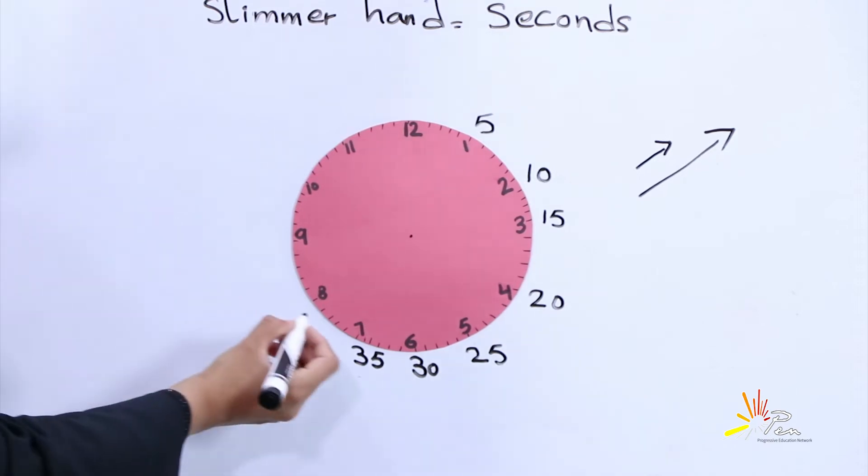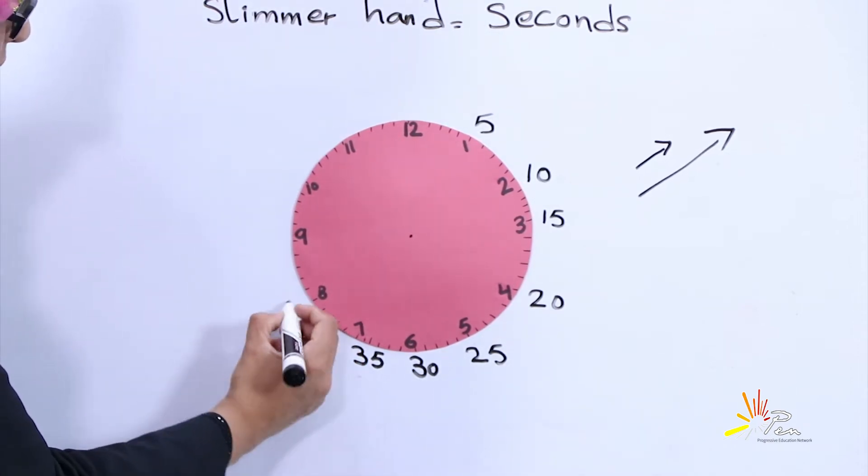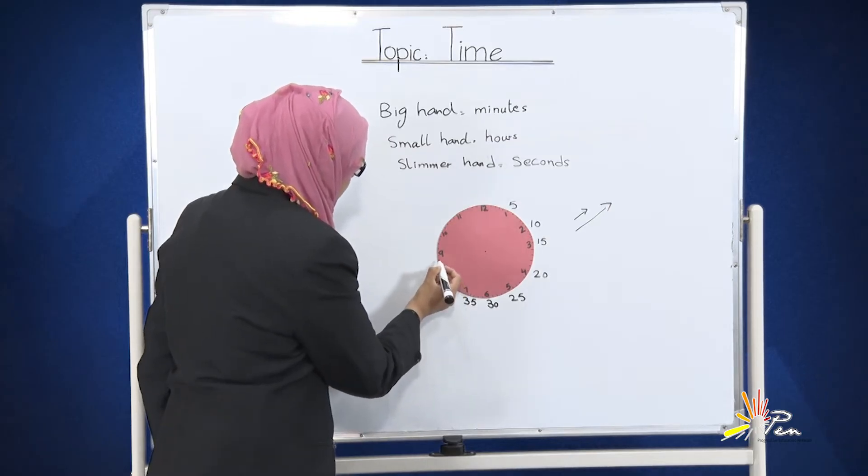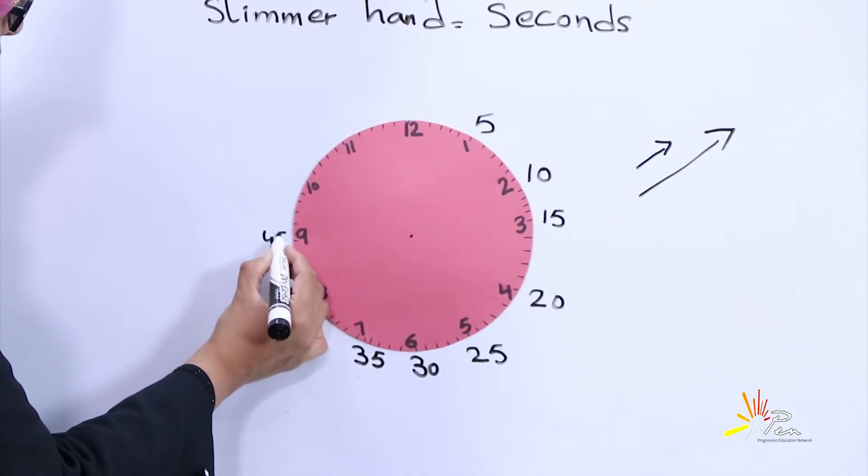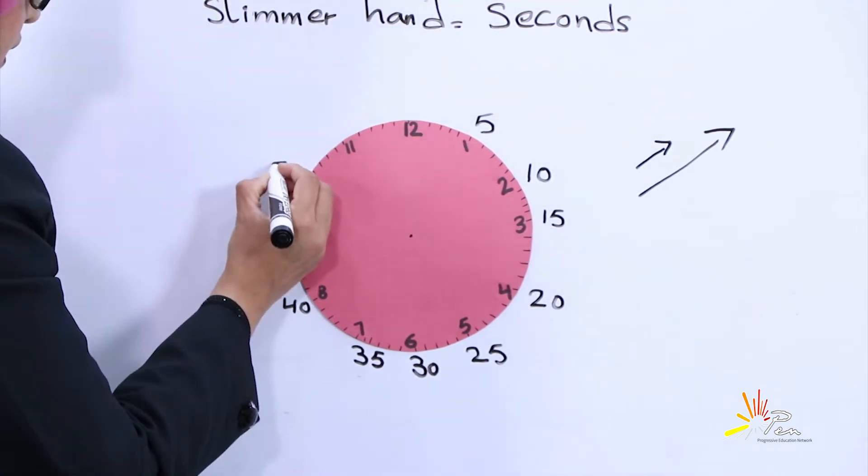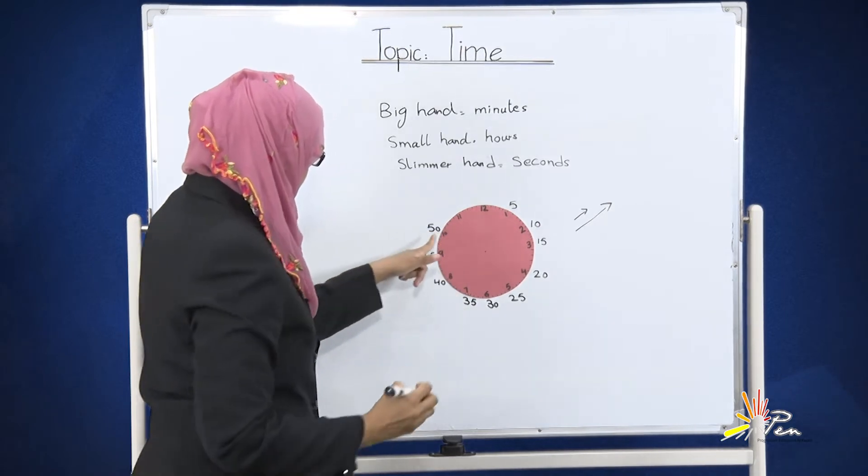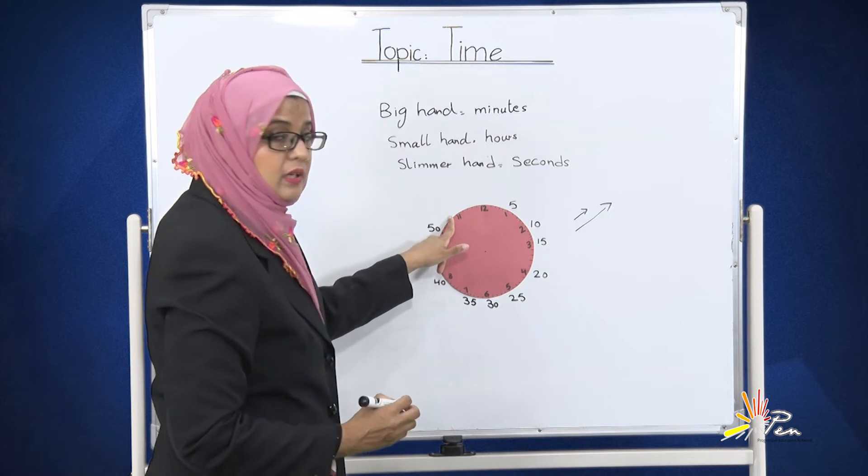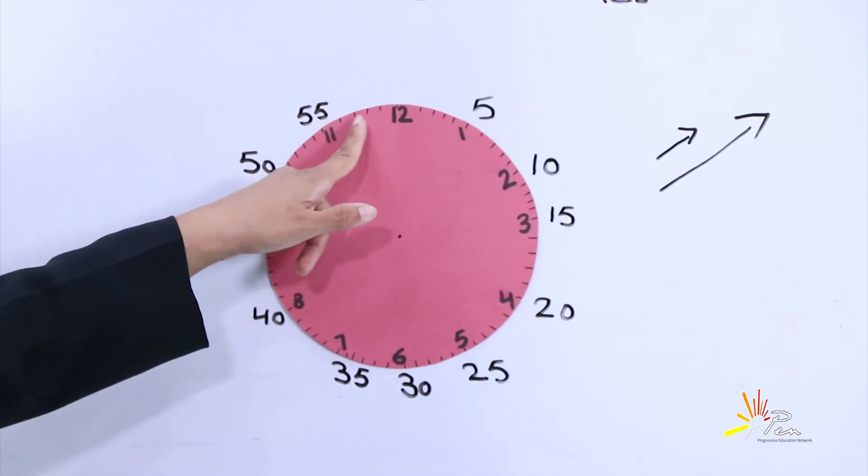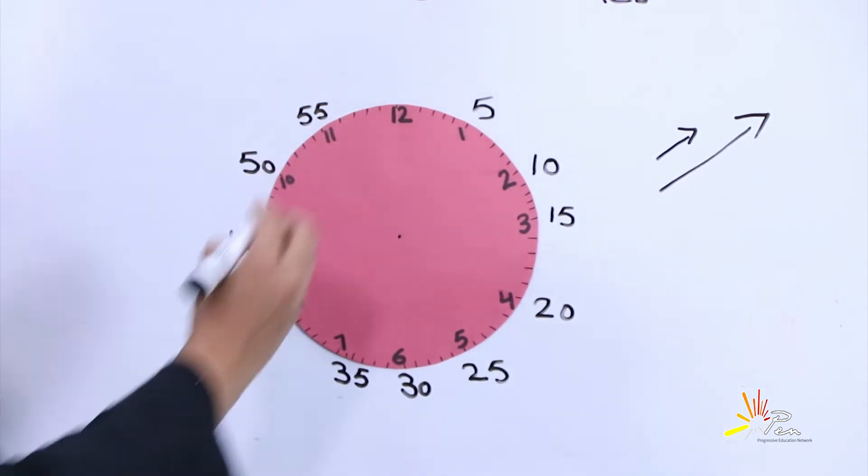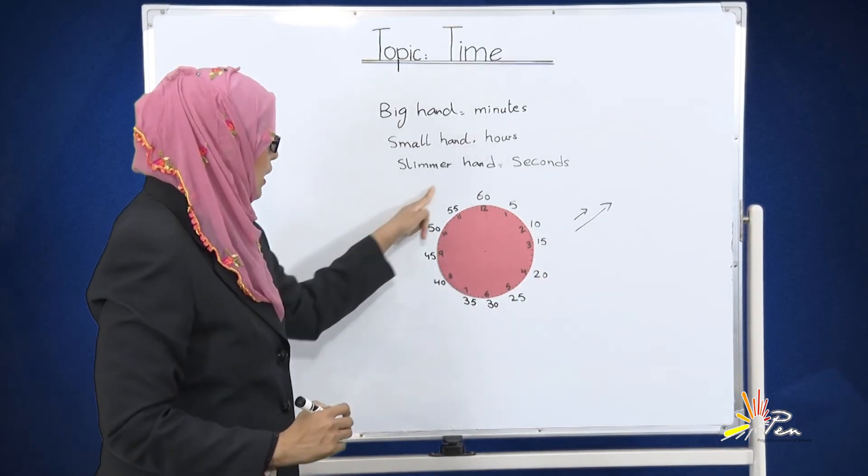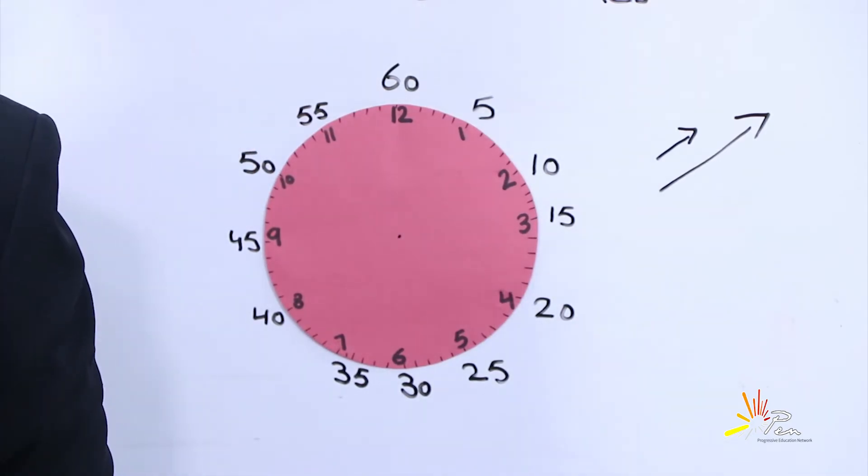26, 27, 28, 29, and 30. 31, 32, 33, 34, and 35. 7 shows us 35 minutes with the bigger hand. 36, 37, 38, 39, and 40. We will move forward: 41, 42, 43, 44, and 45. 46, 47, 48, 49, 50. 51, 52, 53, 54, and 55. 56, 57, 58, 59, and 60. When the bigger hand completes the whole round from 5 to 60, it becomes an hour.